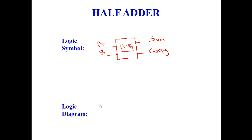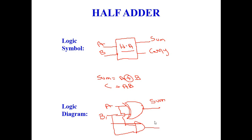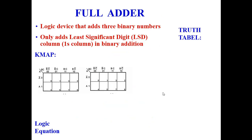For the logic diagram, using the equations Sum = A XOR B and Carry = A AND B: take A and B as inputs, connect them to an XOR gate to get the Sum output, and connect A and B to an AND gate to get the Carry output. This is the complete logic diagram of the half adder.